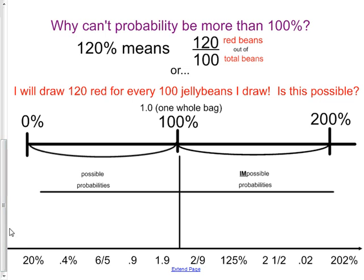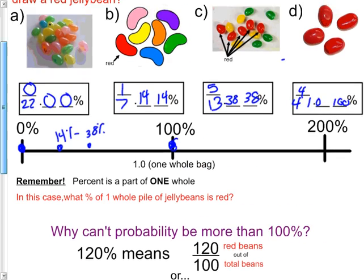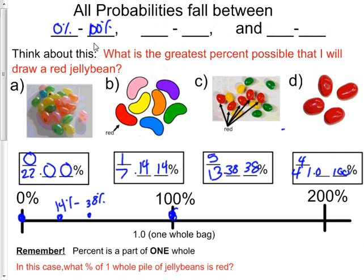Before I give you the answers for this, let's go back up here. We know that all the probabilities of drawing red were between 0 percent and 100 percent. Let's see if we can write those two values as decimals and fractions as well. There are three ways to write part of a whole. That's a percent, a decimal, and a fraction.